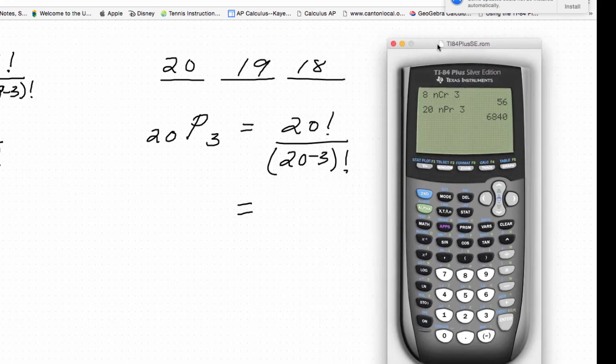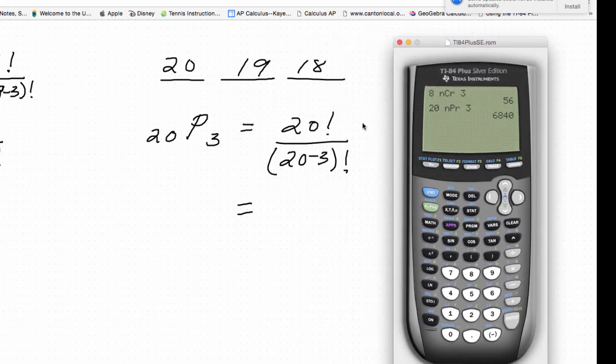And there's your total 6,840. It's that simple on the TI-84. So if you have any questions or comments on how to use permutations or combinations on the TI-84, go ahead and type them below. We'll see you next time.